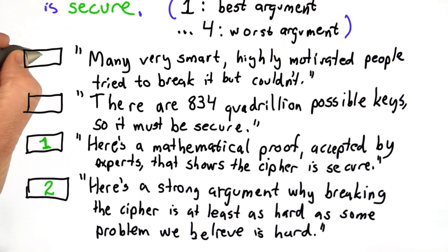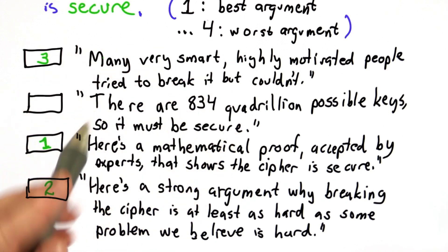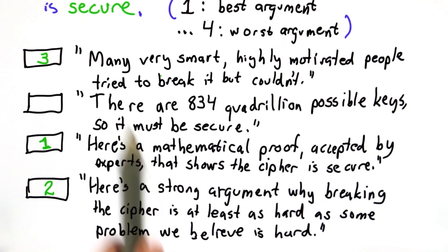The next best is this one that many smart, highly motivated people tried to break it but couldn't. This is often the best we can do, and for the best symmetric ciphers that are in use today, this is really the reason that they're argued secure.